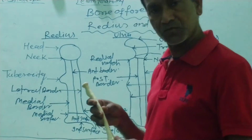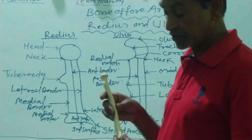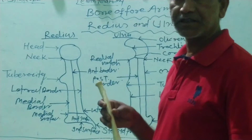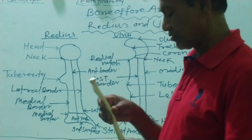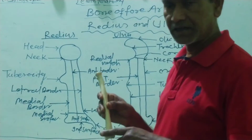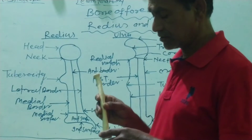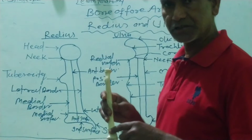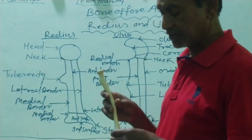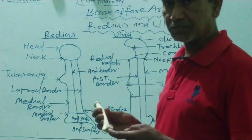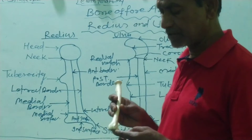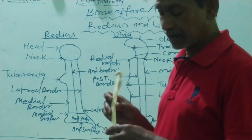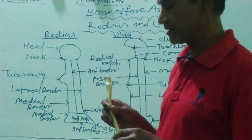The lower end of the radius is flattened from side to side and presents five surfaces. First, the anterior — the front area known as the anterior surface. Second, behind it is the posterior surface, which is very smooth. At the lower end of the radius, there is also an inferior surface, and laterally a lateral surface and a medial surface.